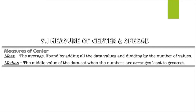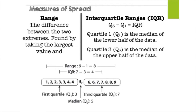The median is like the median in the middle of a highway — it's the middle value of a data set. As you arrange the values from least to greatest, you find the one in the middle. If there are two in the middle, you take the average of those two, and that is your median.